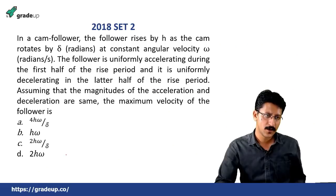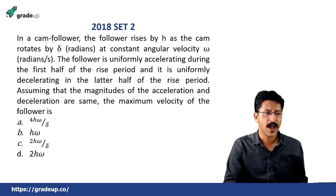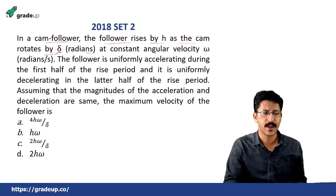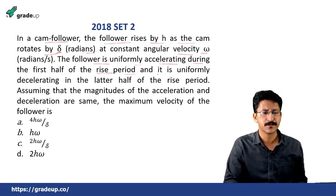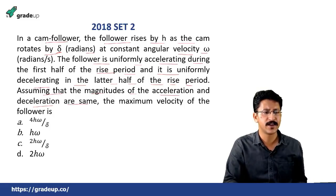Next question. Only one question has come from cam and that too a very theoretical question. Let us see what it is. In a cam follower, the follower rises by H as the cam rotates by delta radians at constant angular velocity omega radians per second. The follower is uniformly accelerating during the first half of the rise period and it is uniformly decelerating in the later half of the rise period. Assuming that the magnitudes of the acceleration and deceleration are same, the maximum velocity of the follower is.